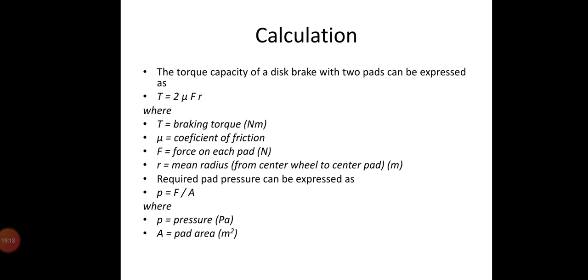R is the mean radius. The required pad pressure, denoted as small p, equals the clamping force per unit area. So the clamping force F equals pad pressure p times pad area A. P is the pressure and A is the pad area. Clamping force can be calculated if you know the pressure and the cross-sectional pad area. We can easily find out the clamping force required for a disc braking system.